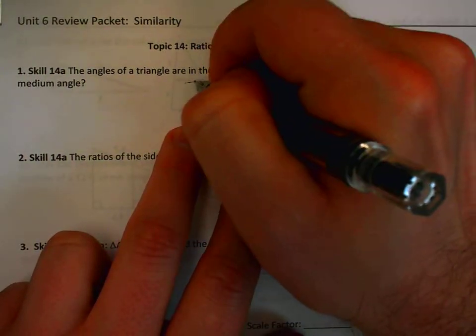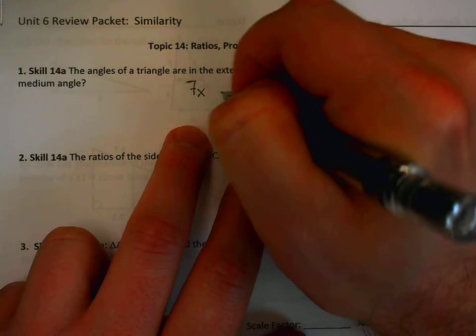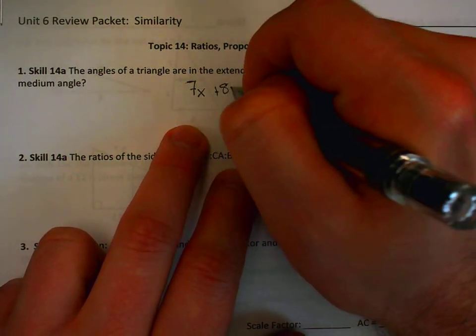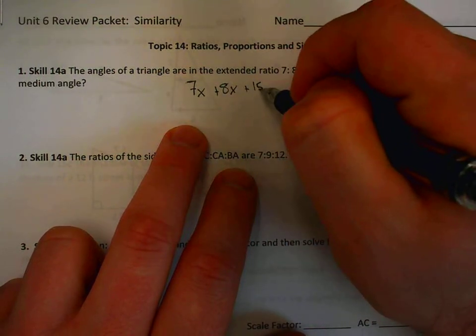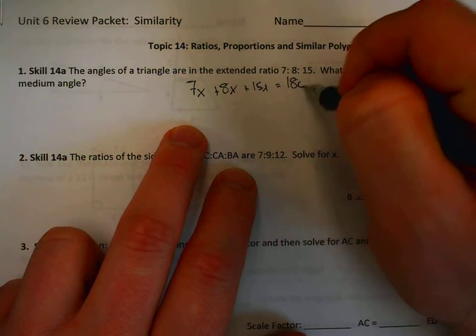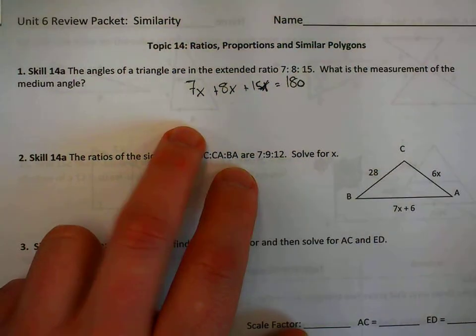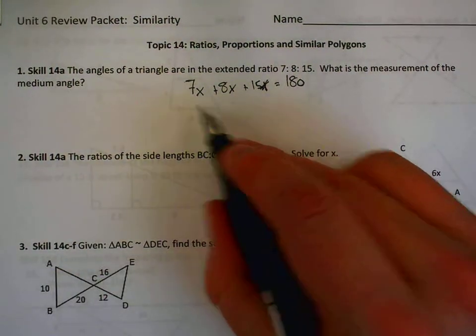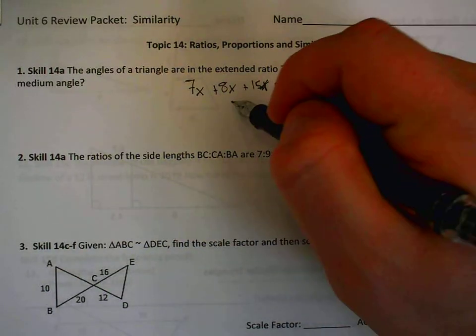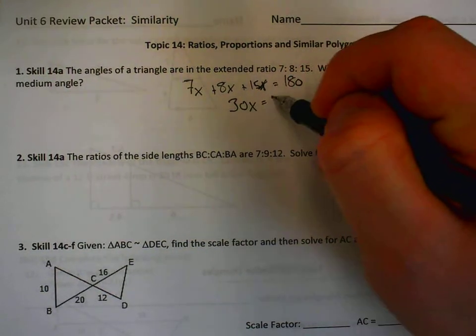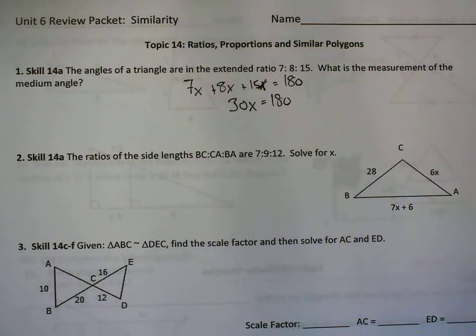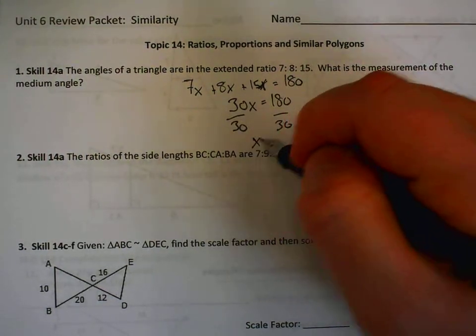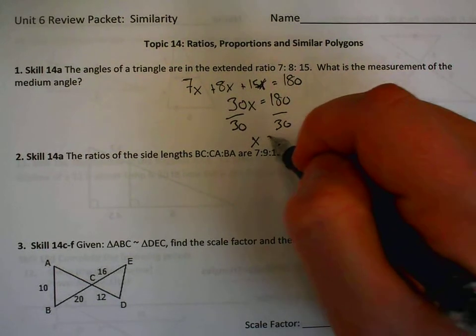We know that the angles of a triangle have to add to be 180 degrees, so if we add together 7x, 8x, and 15x, then the three of these together would have to make 180. From here, I can solve this equation by combining like terms. 7x plus 8x would be 15x, plus the other 15x would be 30x. And then to get x by itself, divide by 30, which gives me 6.